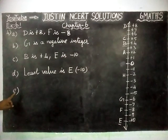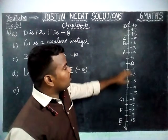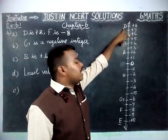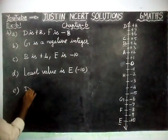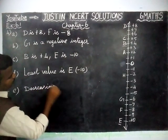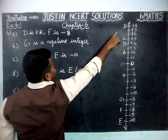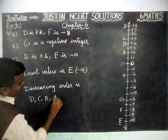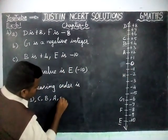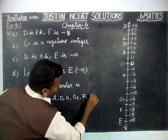Next, the last question, part E: arrange all the points in decreasing order of value. Decreasing means from the highest value to smallest value. Above 0, the highest value is D, and the smallest value is E at minus 10. So the decreasing order is: D, C, B, A, O, H, G, F, and E.